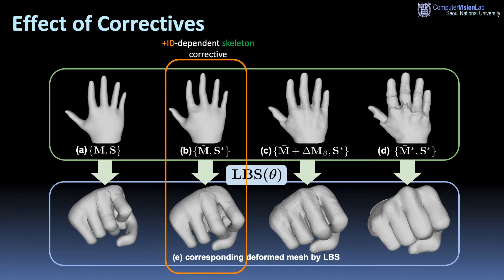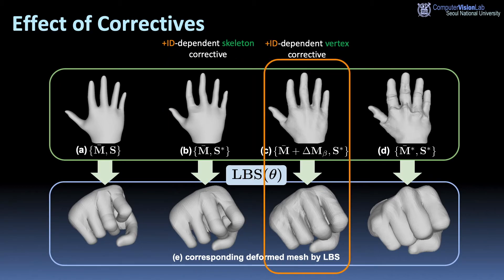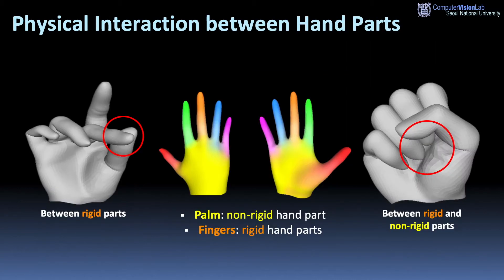This figure shows the effect of correctives. ID-dependent skeleton corrective personalizes 3D hand joint coordinates. ID-dependent vertex corrective personalizes hand mesh vertices. Finally, pose-dependent vertex corrective replicates local geometric deformation according to the pose.